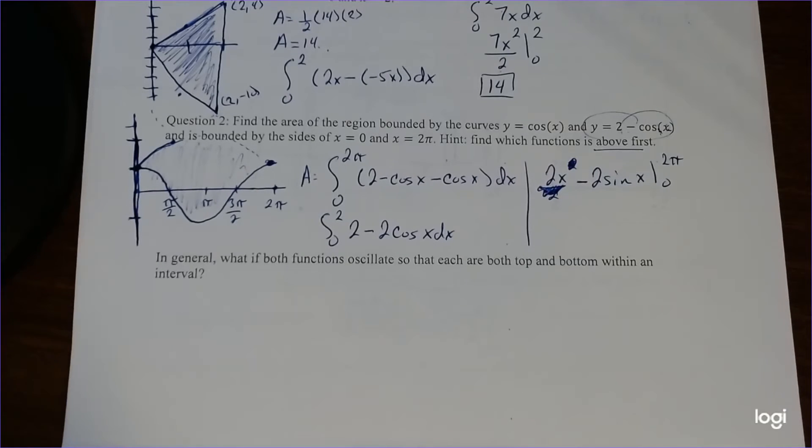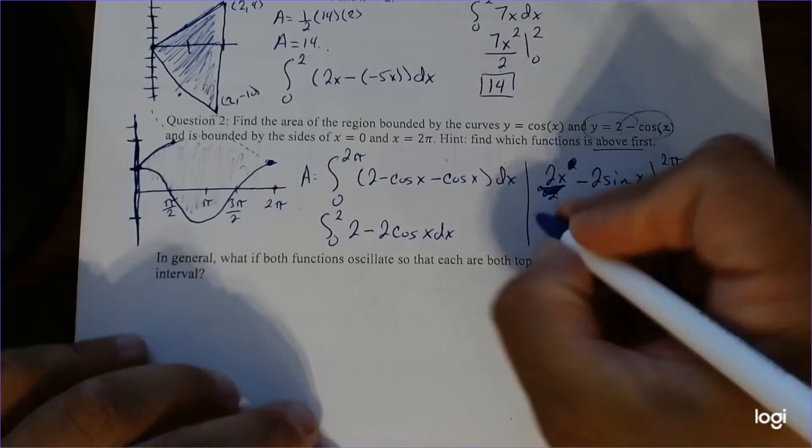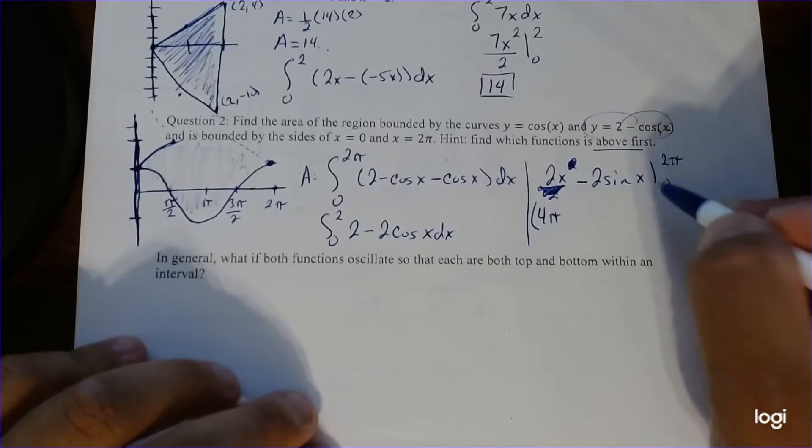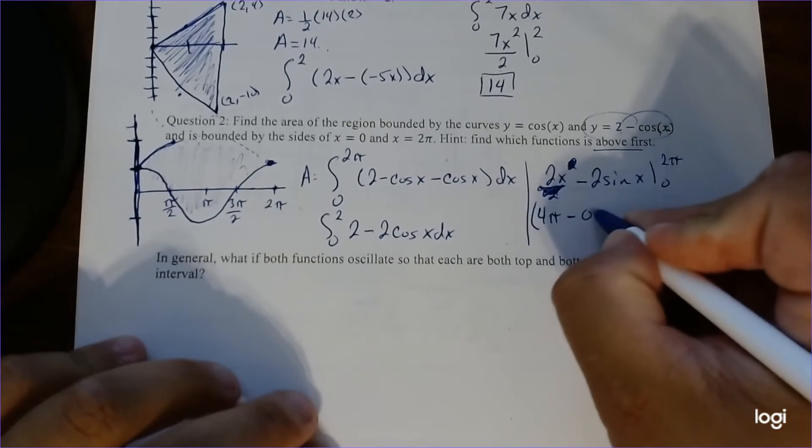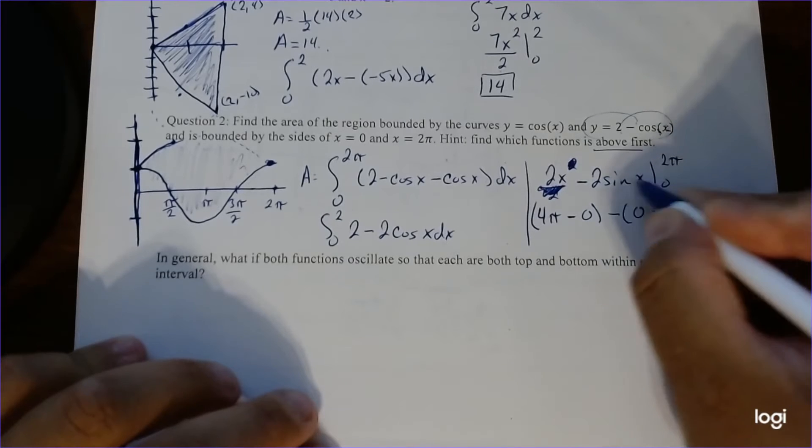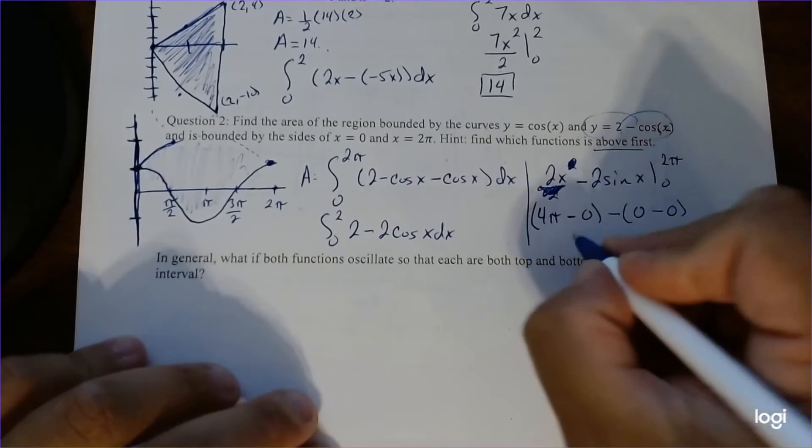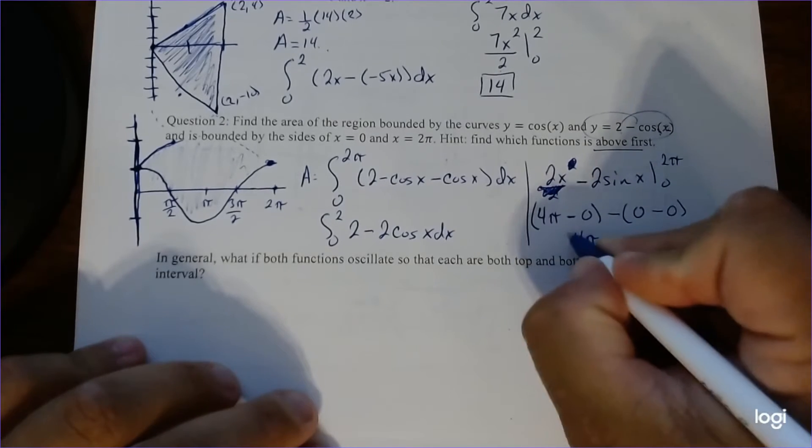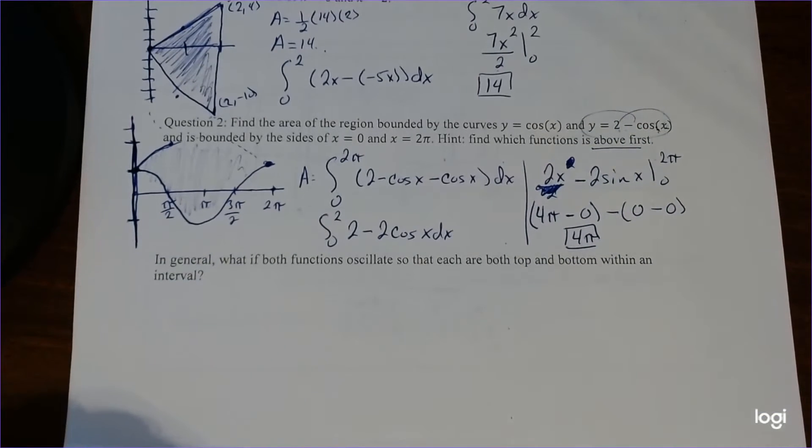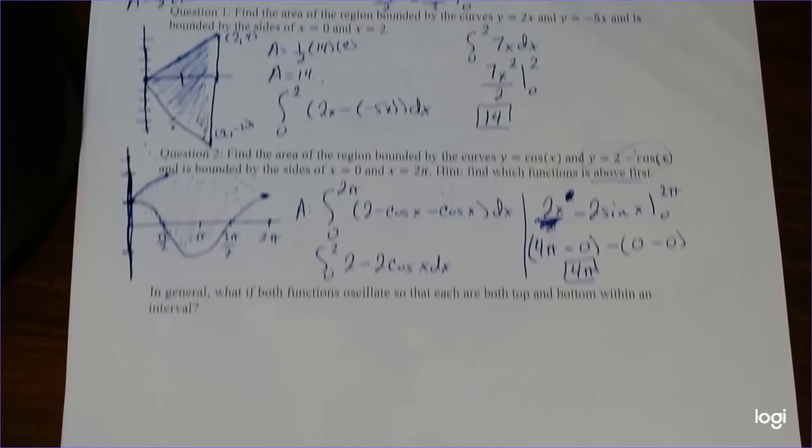So this one down here is going to be negative 2 sine of x evaluated at 0 and 2 pi. Alright, so now we just plug in. So plug in 2 pi, that's going to give you 4 pi. Plug in here. Sine of 2 pi is 0, so this is a big fat 0. Minus, plug in 0, that gives you 0. Plug in 0, that also gives you 0. So this is just 4 pi is the area between the bounded series. And there we go. That's our last example for bounded between two parts so far.